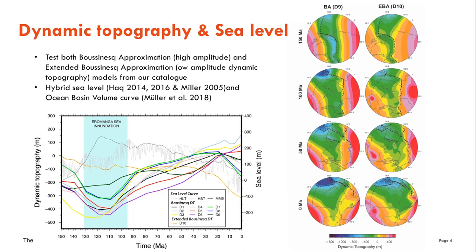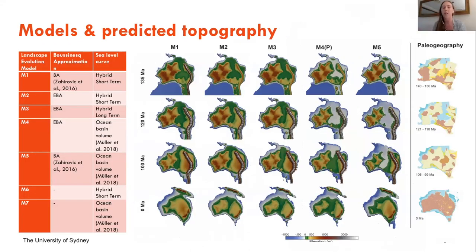For this set of models, everything will remain consistent. We then combined the Boussinesq approximations with the sea level curve. What we found was that we didn't have a significant difference between hybrid long-term and hybrid short-term sea level curves, but we did find a significant difference when we tested the ocean basin volume curves with both the Boussinesq and extended Boussinesq models.